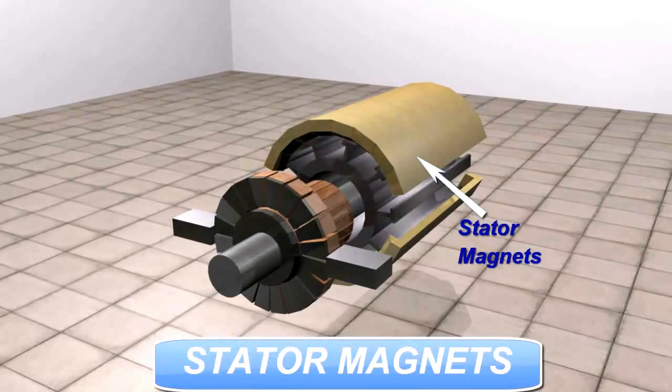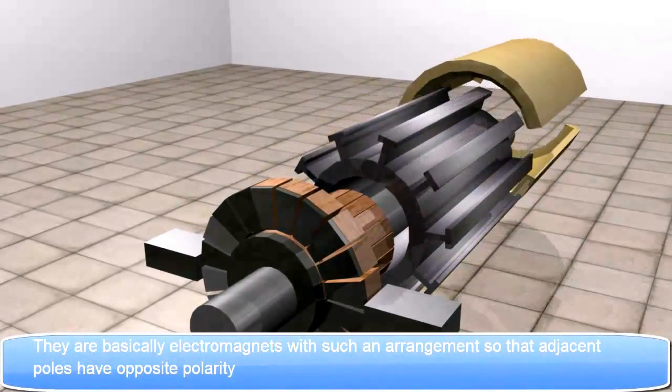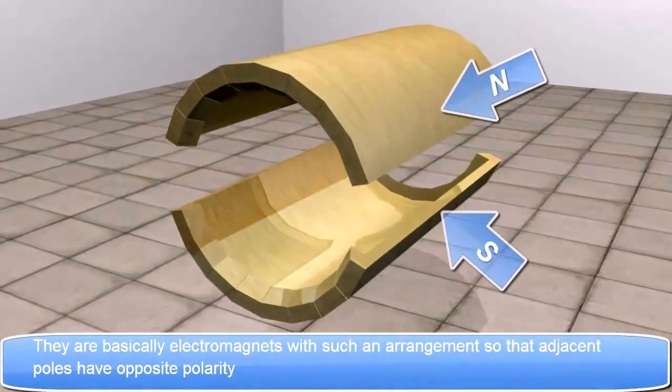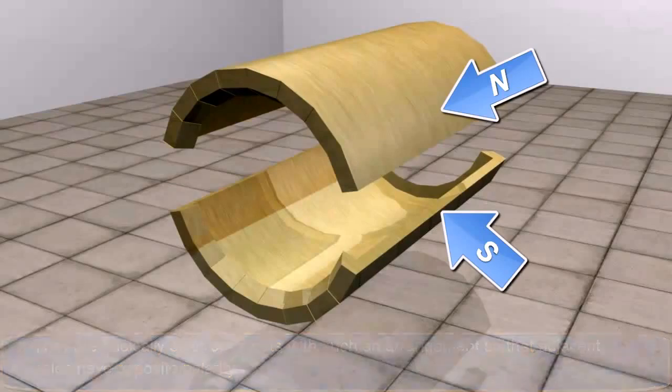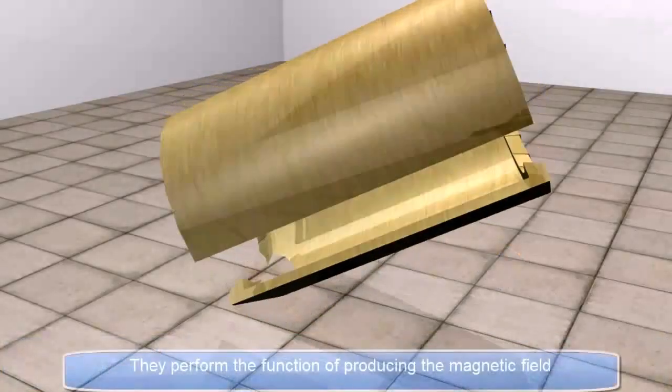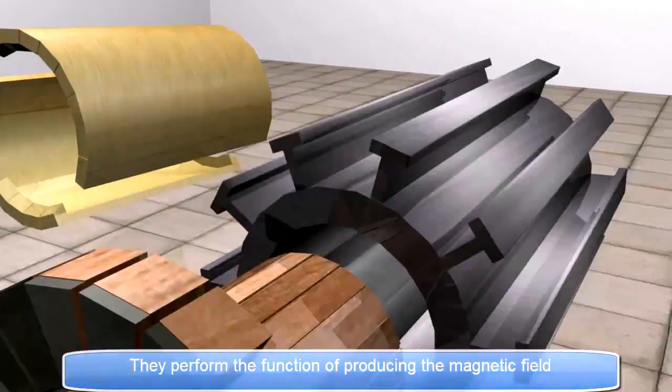Stator Magnets. They are basically electromagnets with such an arrangement so that adjacent poles have opposite polarity. They perform the function of producing the magnetic field.